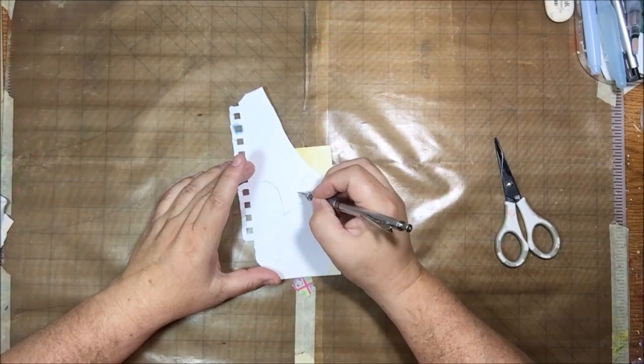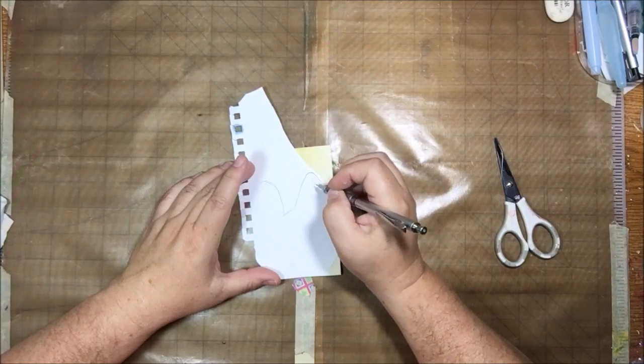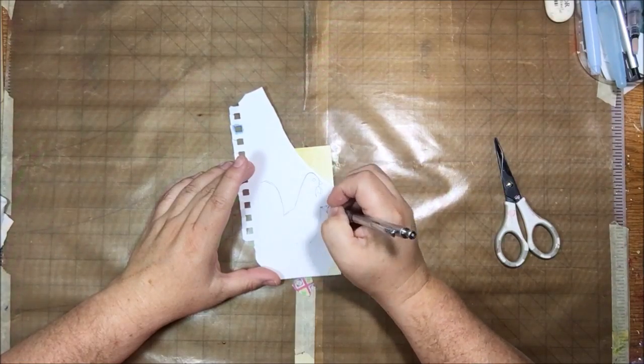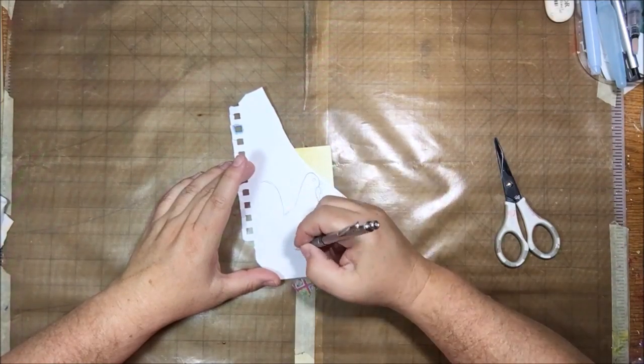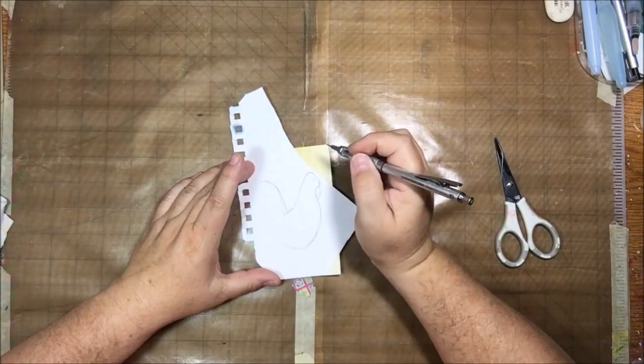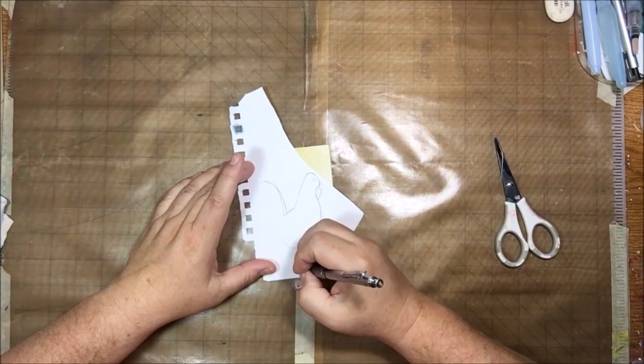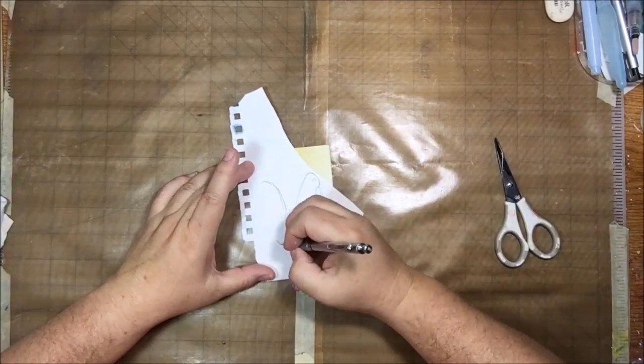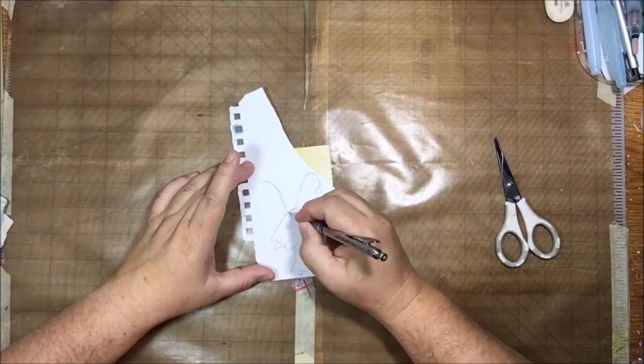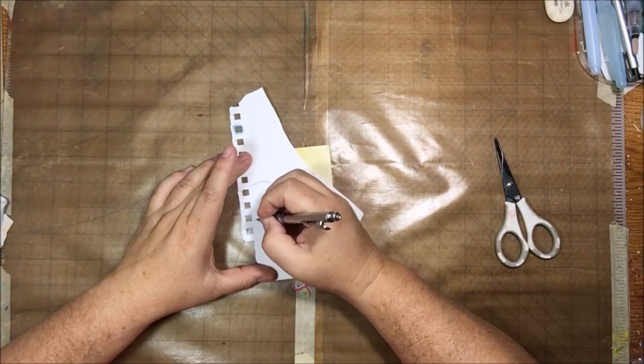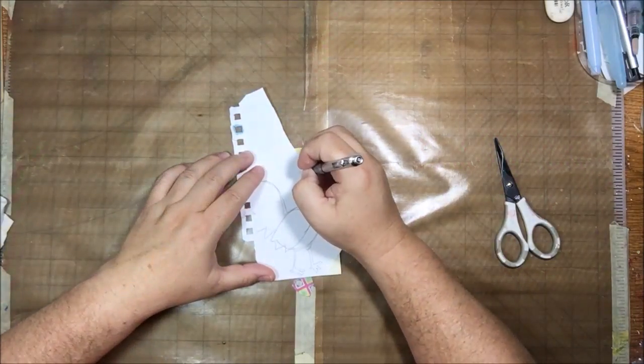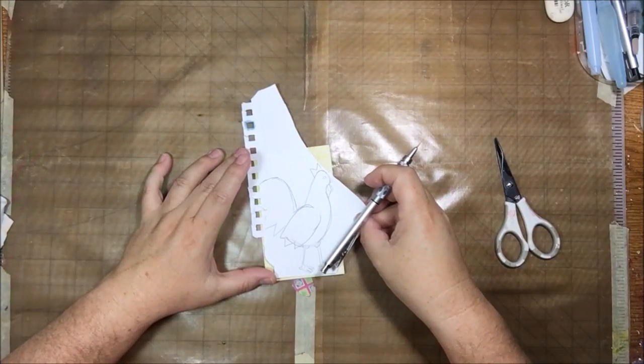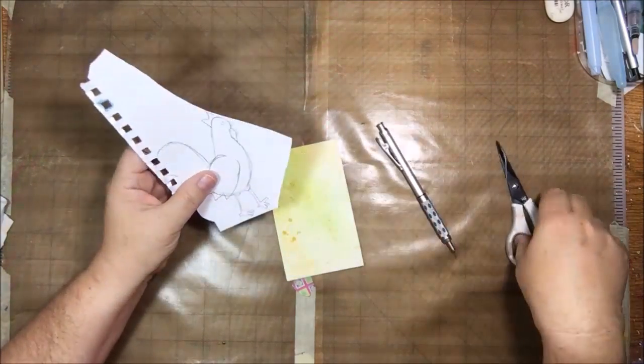I glued that on there with golden soft gel matte medium and made sure it was good and glued down. Now I'm drawing a rooster. The reason I was thinking about roosters is because I'm going on that trip to the family reunion, and I'm staying with one of my aunts that collects roosters.